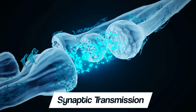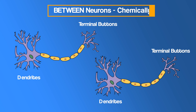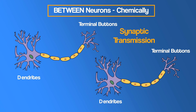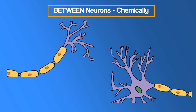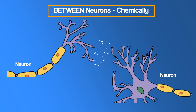Communication within a neuron is electrical, but what about between neurons? Between neurons, signals are transmitted chemically. This process is called synaptic transmission — the process by which neighbouring neurons communicate with each other by sending chemical messages across the gap. Neurons do not actually touch one another; each is separated from the next by a tiny gap called the synapse. Synapses allow electrical messages to travel from one neuron to an adjacent one by transmitting signals chemically using neurotransmitters.